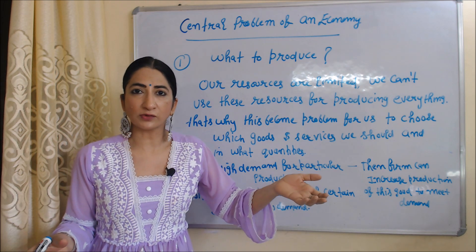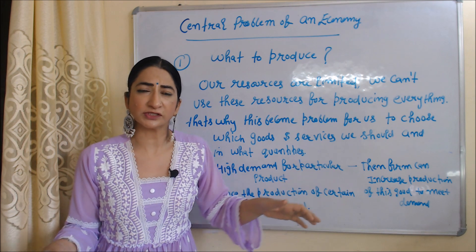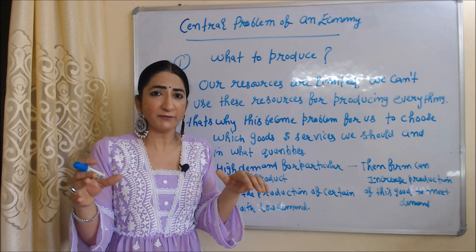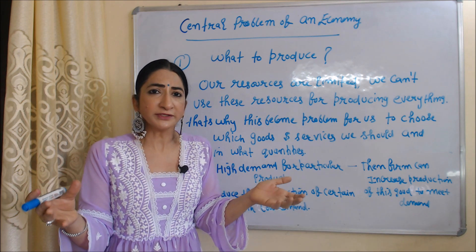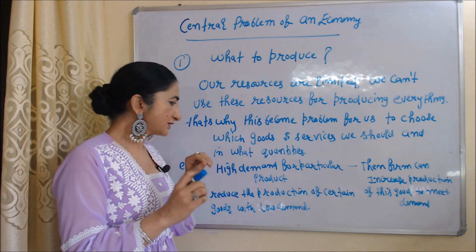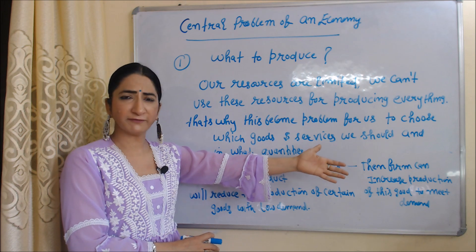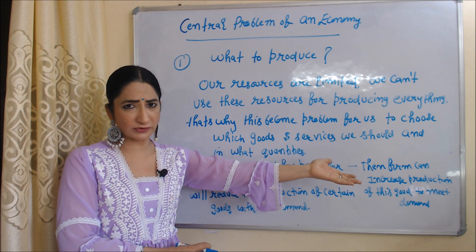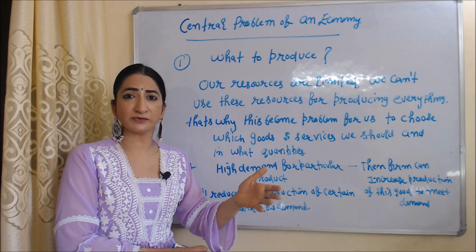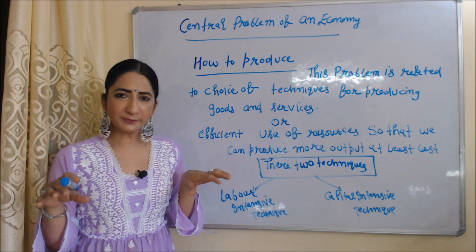The first central problem of economy is 'what to produce.' Our resources are limited, so we cannot use them for producing everything. That's why it becomes a problem to choose which goods and services we should produce and in what quantities. For example, if there is high demand for a particular product, firms can increase production of those goods and reduce production of goods with low demand.